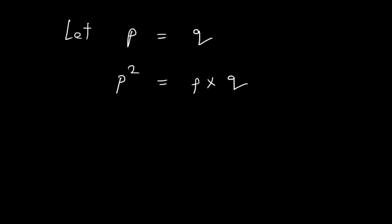Alright, now let's subtract Q square from both sides of the equation. So, I get P square minus Q square is equal to PQ minus Q square.